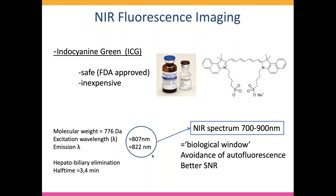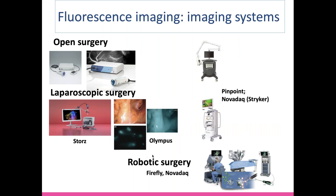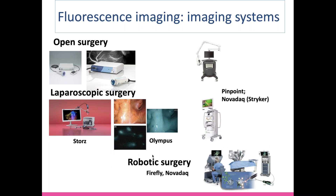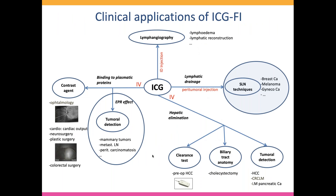Another characteristic is that ICG is eliminated essentially by the hepatobiliary system and has a very short half-life. There are already many machines on the market for open surgery, laparoscopic surgery, and robotic surgery, making it very easy to use in clinical practice. There are many clinical applications of ICG depending on the type of injection — intradermal, intravenous, or peritumoral. Here we will speak only about the sentinel lymph node technique by peritumoral injection, and I will present a new approach.